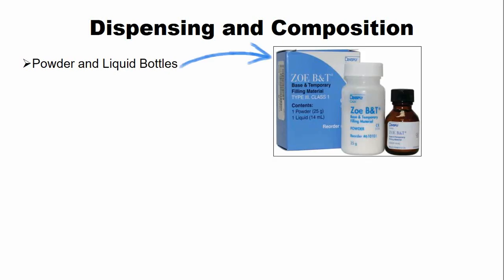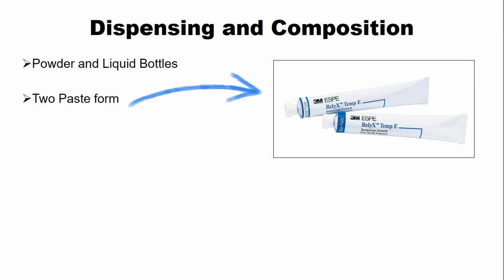So how is the material supplied and what is the composition of zinc oxide eugenol cement? The zinc oxide eugenol cement is available in two forms: one is available in the form of powder and liquid bottles, and the second form is two paste forms.